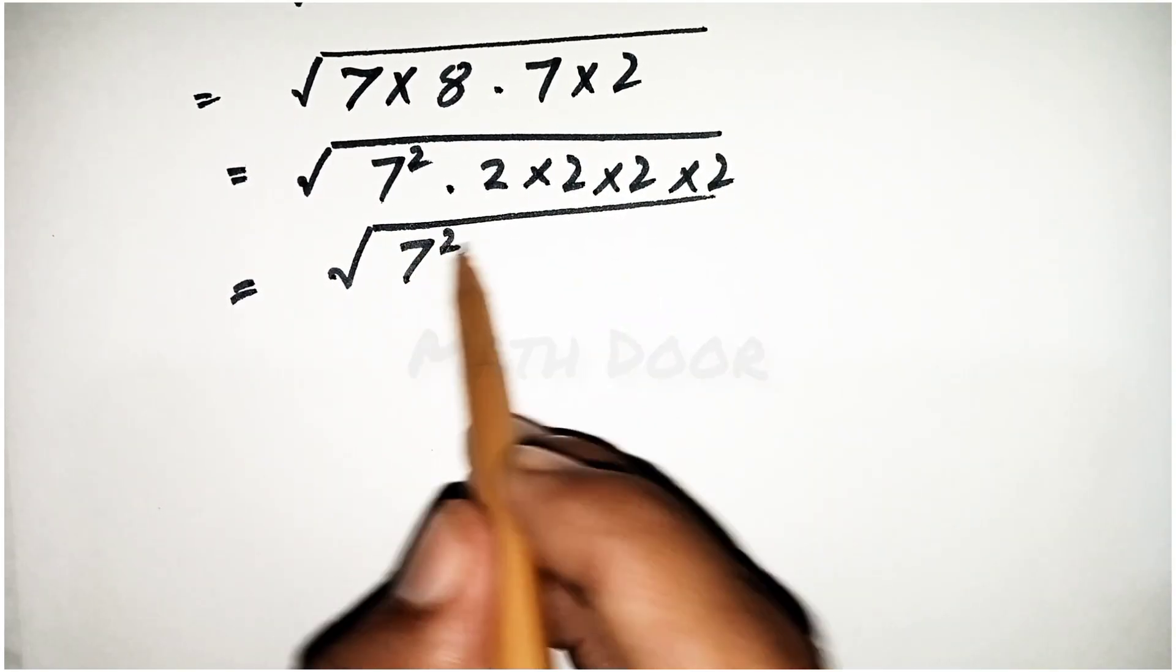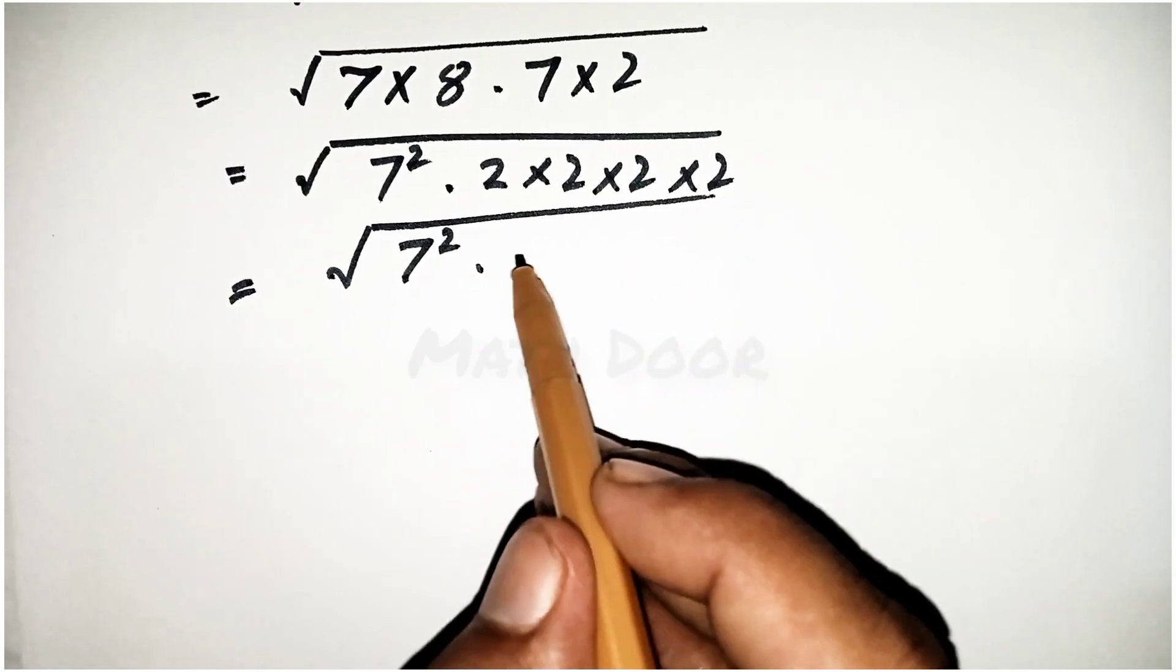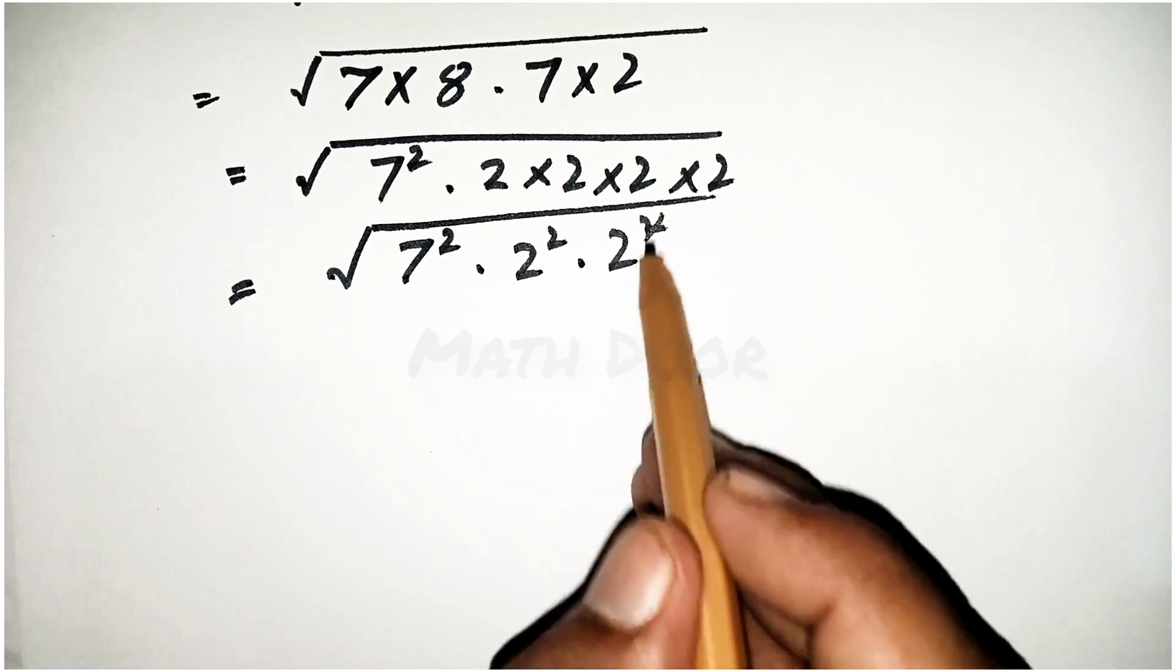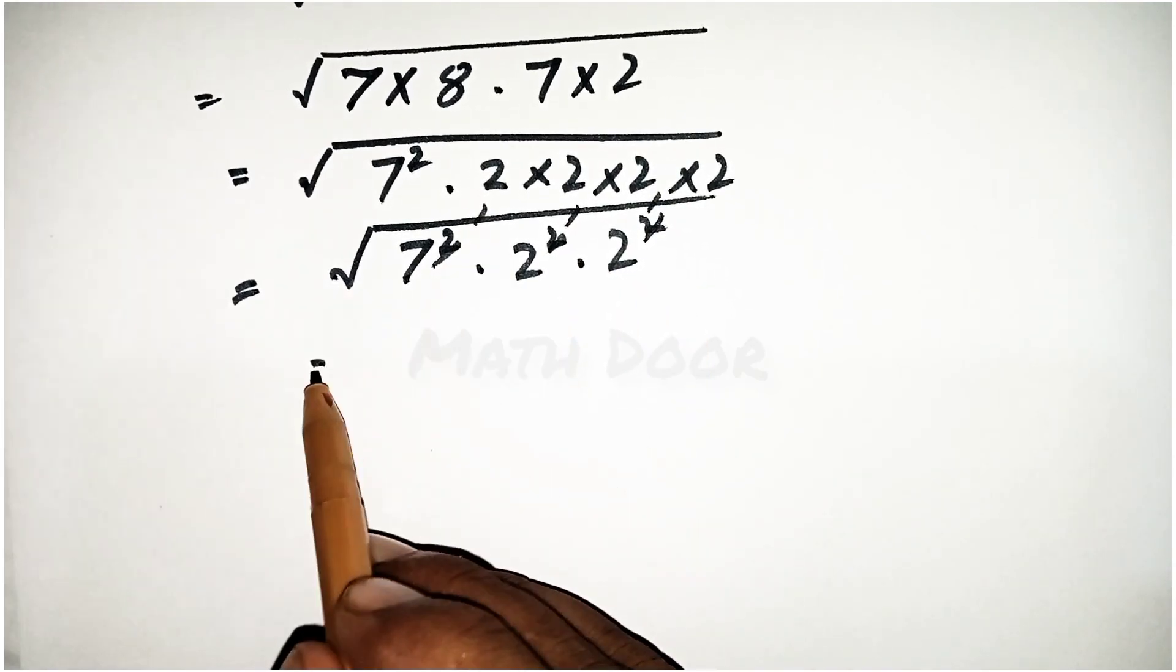Now we get 7² and this equals 2² × 2². The square will cancel with the square root.